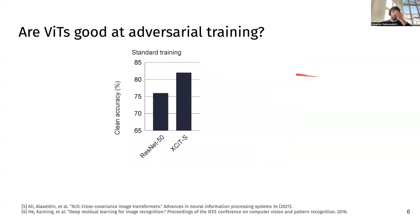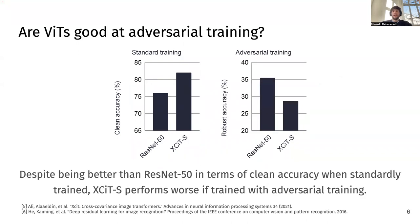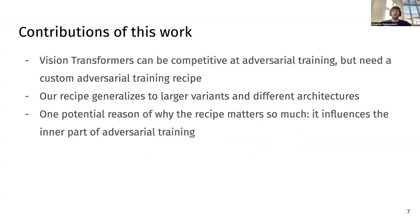For instance, when we compare a vision transformer called Excite-S with ResNet-50, which is comparable in size and parameters, Excite-S does significantly better at standard training. However, are visual transformers good at adversarial training? If we simply take the canonical recipe — the one usually used for standard training — and apply it to adversarial training, it looks like visual transformers are not really that good. This is quite unexpected given their strong standard training performance. So what we do in this work is investigate how to make visual transformers competitive at adversarial training, and we find that it's possible — but we need a custom adversarial training recipe.